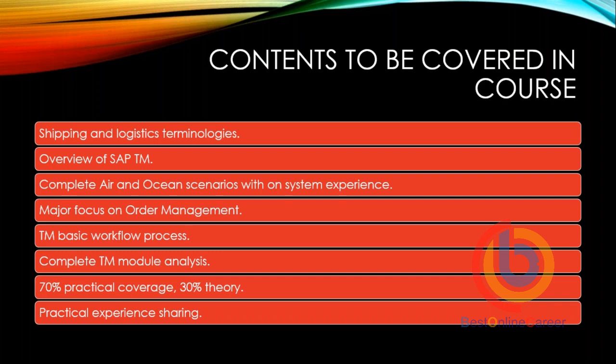SAP came out with the 9.5 version and soon after the 9.6 version, but 9.6 was not stable. Alongside, they also launched the embedded TM HANA system. The major focus of the market moved toward the HANA system. We won't talk much about 9.6 since it was just a simple release, and then alongside they launched the HANA system. Whatever we have in SAP TM 9.5, you will find the same contents in the HANA system, except the Fiori UI and HANA-specific functionality.